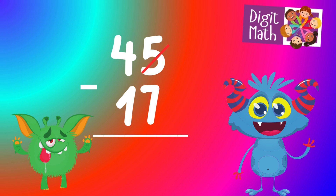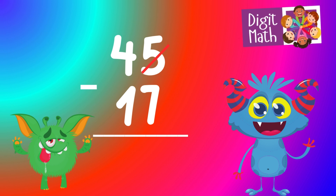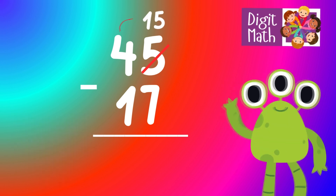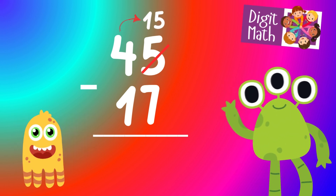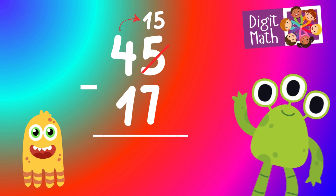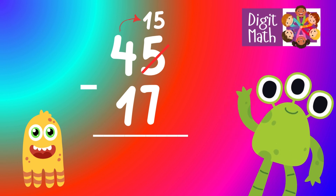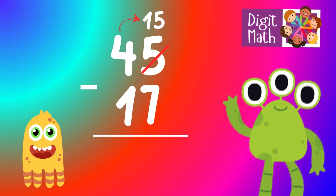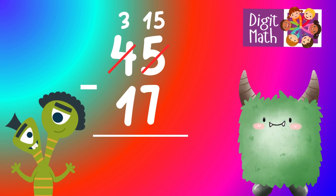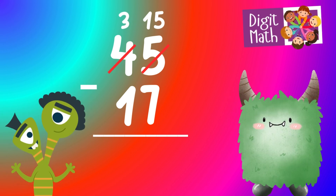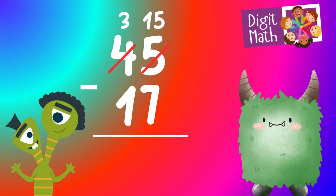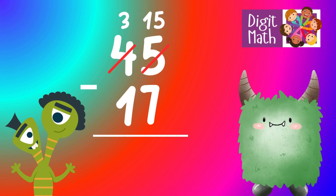In the Units column, we have 5 minus 7. Since 5 is less than 7, we need to borrow 1 from the Tens column. In the Tens column, we initially have 4. After borrowing 1, it becomes 3, and the unit becomes 15, since 5 plus 10 equals 15. Now subtract 7 from 15, which equals 8.